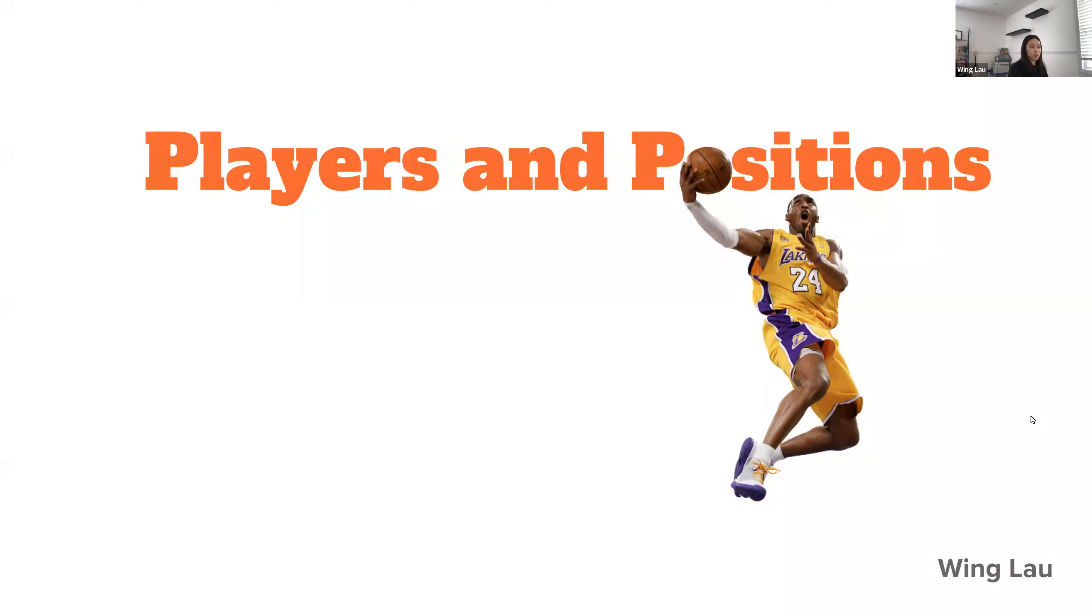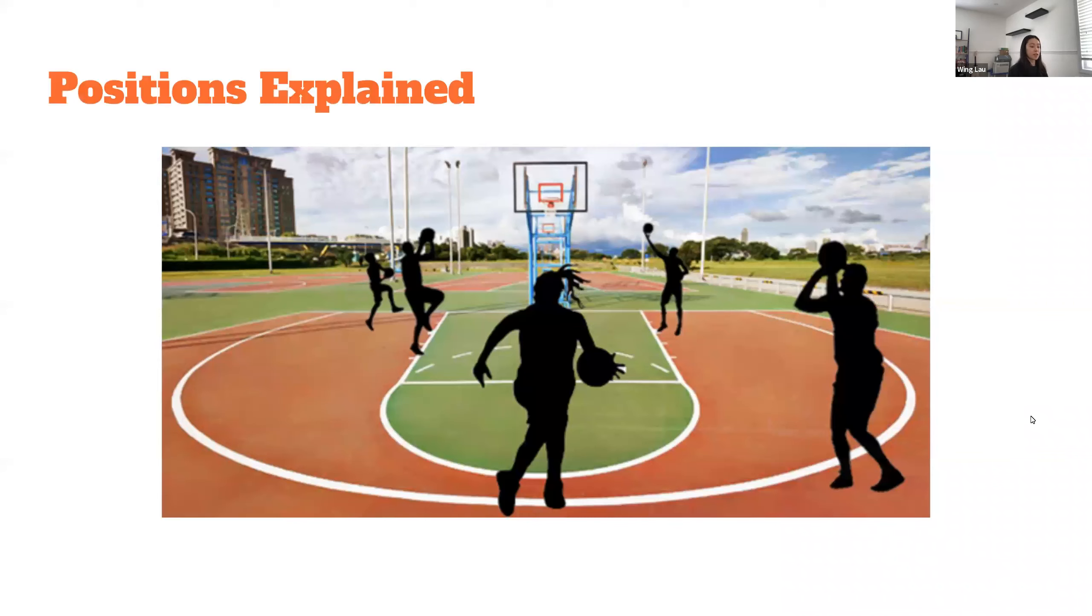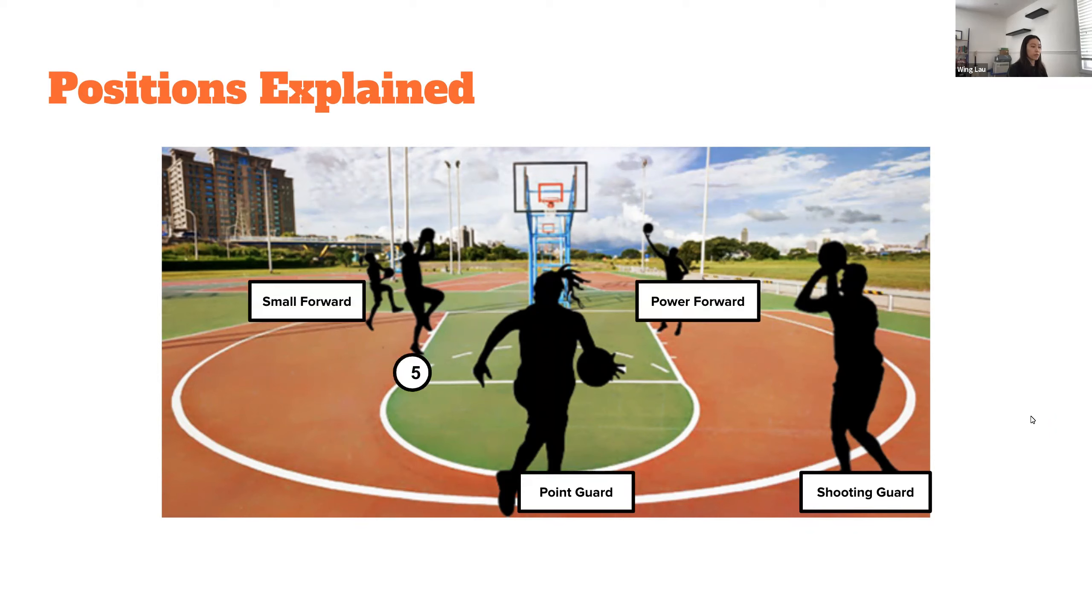The motivation came from the term positionless basketball being thrown around. To understand what positionless basketball is, I will first explain the five traditional positions in basketball, with one being point guard, two being shooting guard, three small forward, four power forward, and five center.